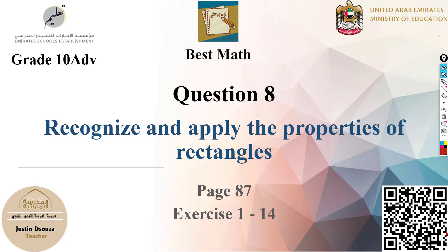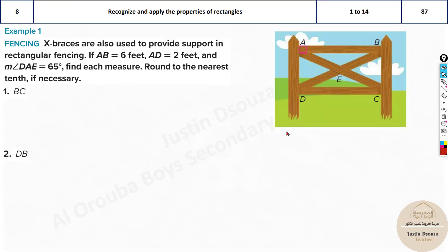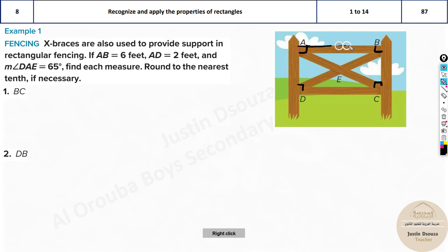Moving on to question number eight: recognize and apply the properties of rectangles. Now we are dealing with rectangles — question seven was on parallelograms. What's the difference? In a rectangle, each vertex is basically a right angle, so every corner is 90 degrees.